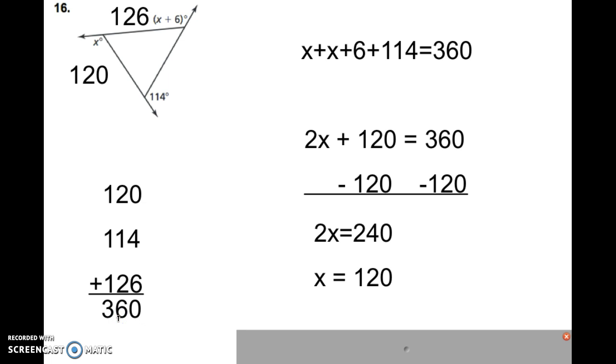6 plus 4 is 10, carry the 1. 2 plus 2 is 4, plus 1 is 5, plus the carried 1 is 6. And then 1 plus 1 plus 1 is 3, so 360. So our exterior angles do add to 360.